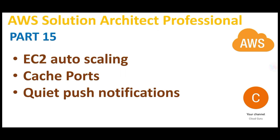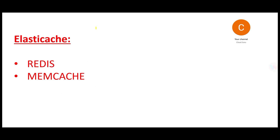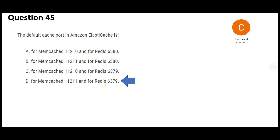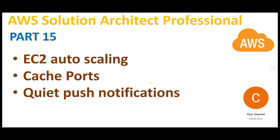This brings us to the end of Part 15. We covered questions linked with auto scaling — setting minimum capacity, maximum capacity, and desired capacity. We also looked at ElastiCache, which is made up of Redis and Memcache, used to make reads faster, with default ports 6379 and 11211. Finally, we looked at silent push notifications and how Cognito works. Remember these three thumb rules. See you in the next part.